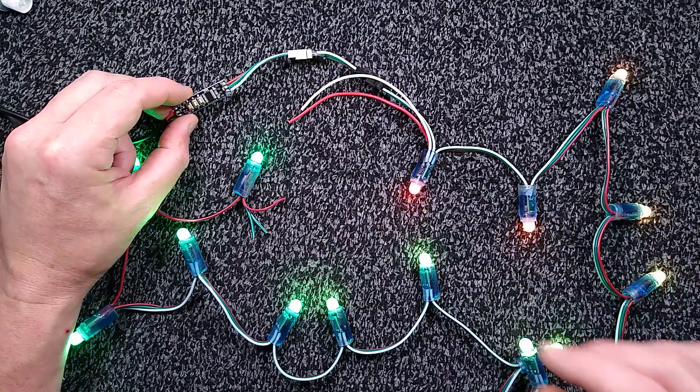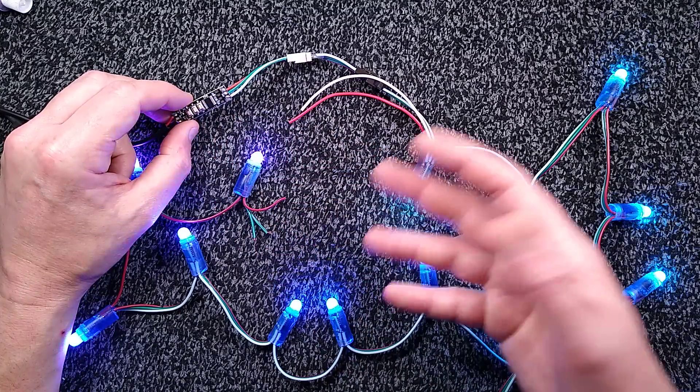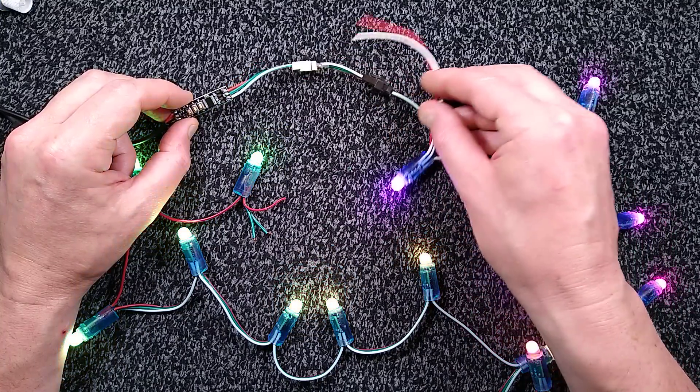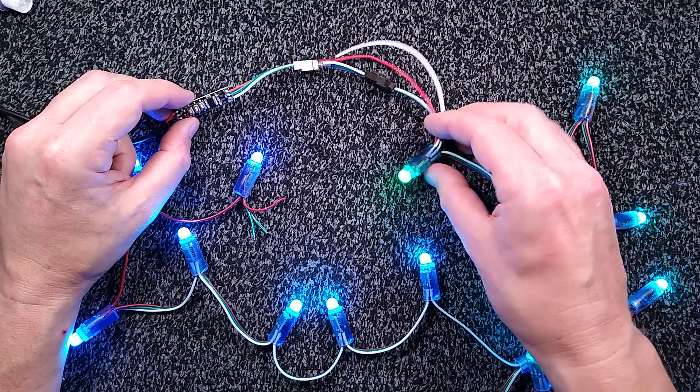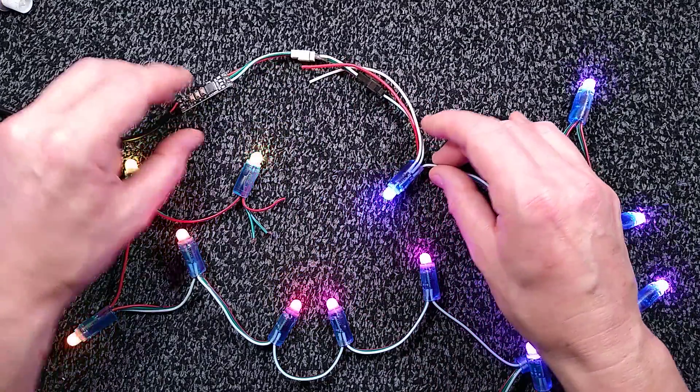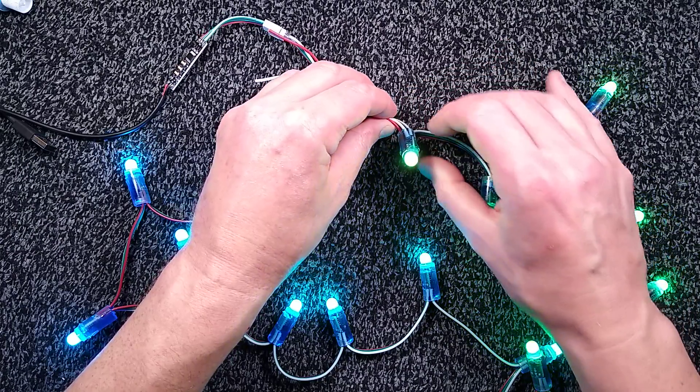This little module is very nice. It's an SP002E and it's basically a self-contained controller for these pixel LEDs, the WS2812B or the WS2811 style pixels that take a serial data line and they basically collect data as it's transmitted.